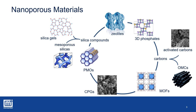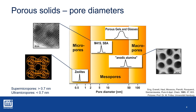Talking about porous materials necessitates the definition of pore sizes. This was carried out by IUPAC, and we see the three ranges divided into micro, meso, and macropores. Micropores have a diameter of up to 2 nanometers and are again divided into super micropores and ultra micropores. Mesopores have diameters in the range of 2 to 50 nanometers, and all pores above 50 nanometers are referred to as macropores. Nanopores are all pores with a diameter of less than 100 nanometers.